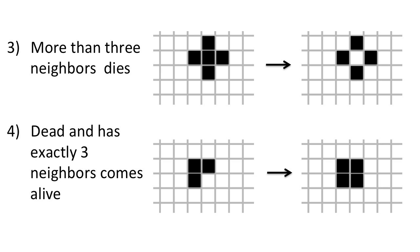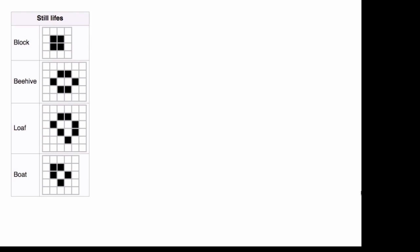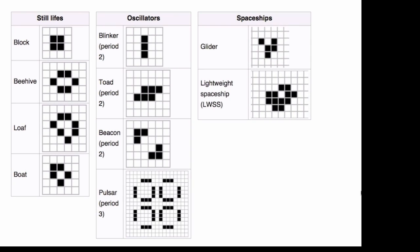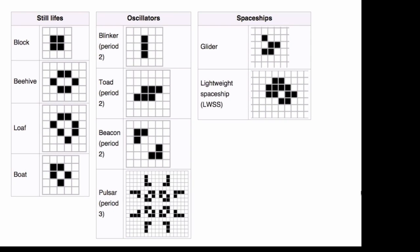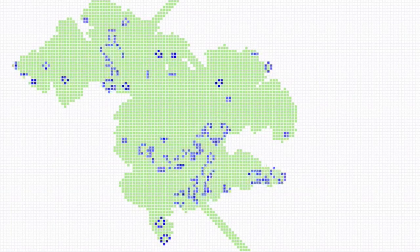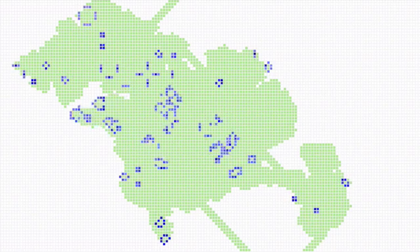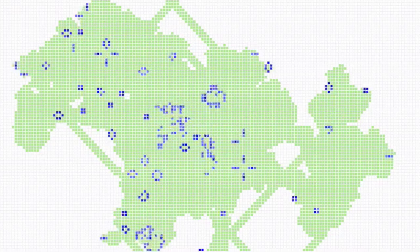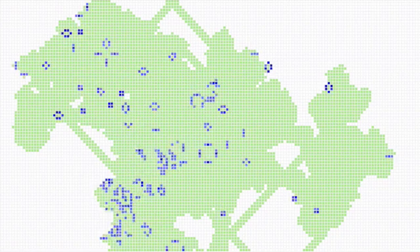These rules produce interesting dynamics such as still lifes that don't change, oscillators, and spaceships that move across the grid. Starting with just a few cells on, you can see that the dynamics can be pretty crazy. The point is that knowing the state of every cell in one generation and knowing the rules lets us determine each cell's state at any time in the future.